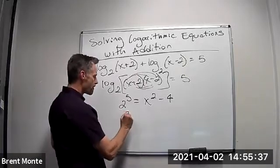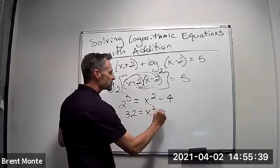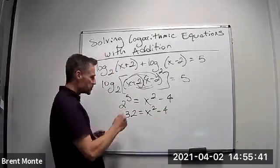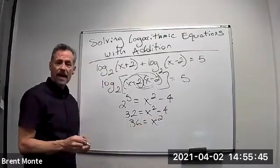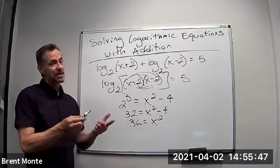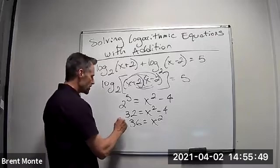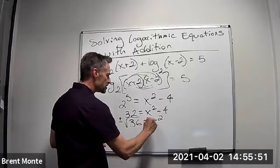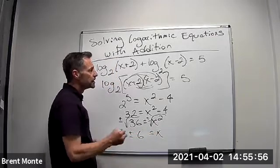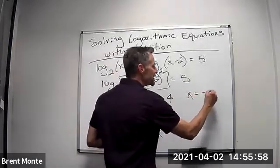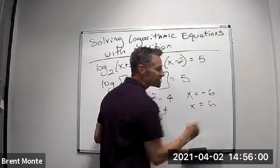So 2 to the 5th, 32 equals x squared minus 4. I add 4 to both sides, 36 equals x squared. And then I take the square root of both sides. Remember, I typically say plus or minus whenever I take the square root of both sides. So this side is just x, and this is plus or minus 6. So I get either x equals negative 6 or x equals positive 6.